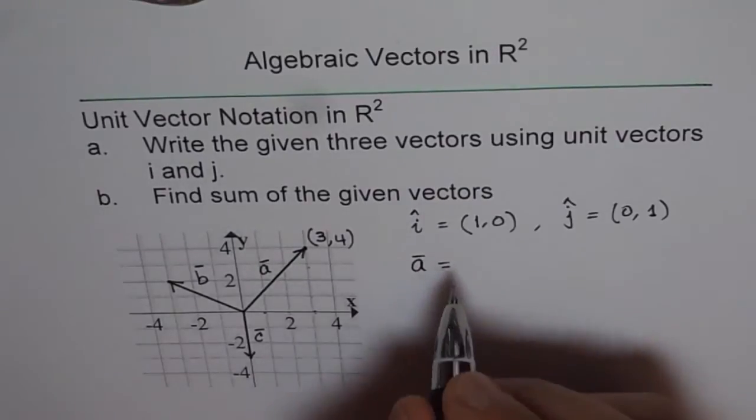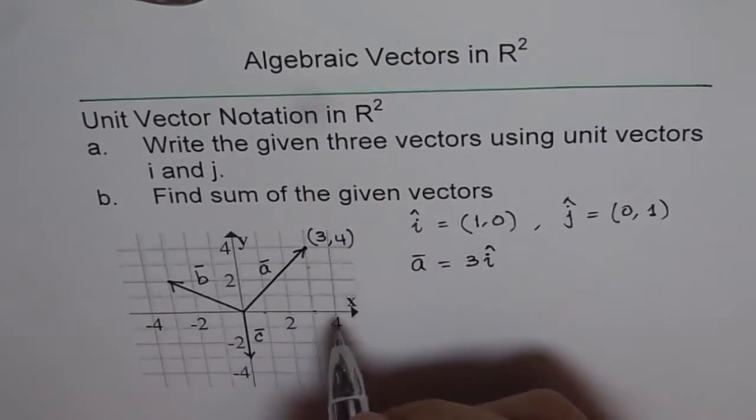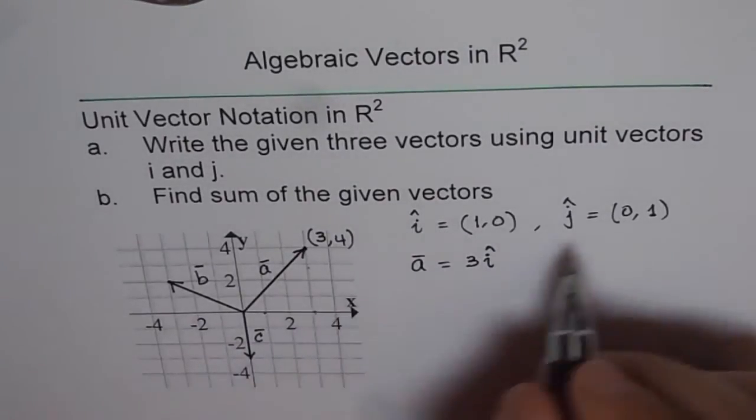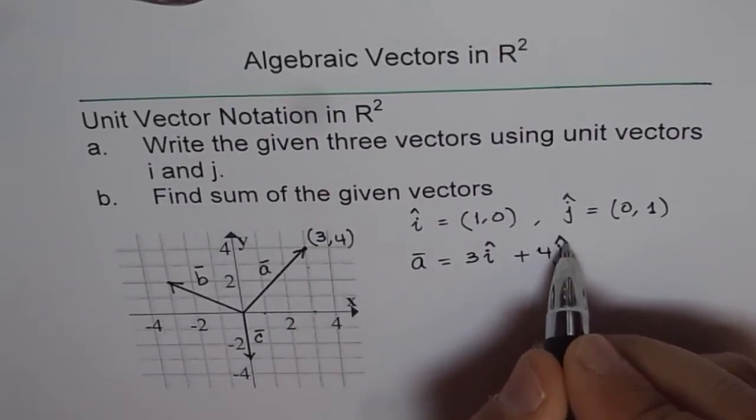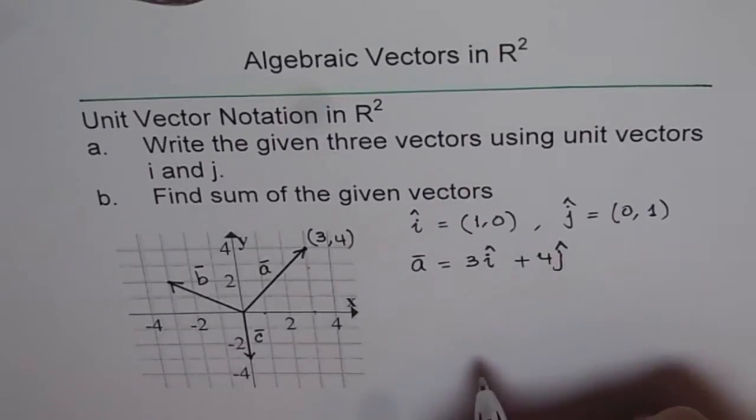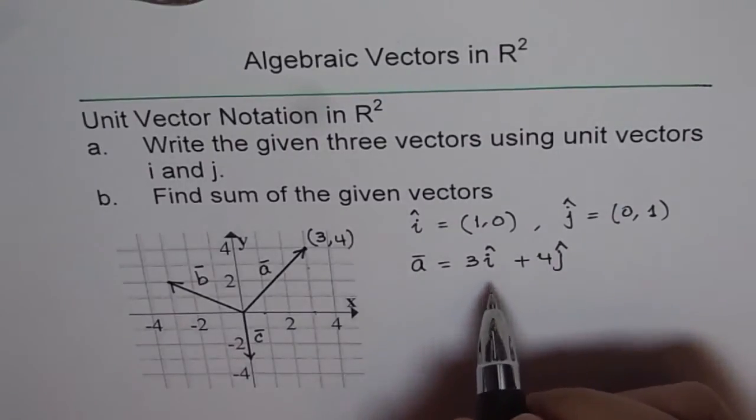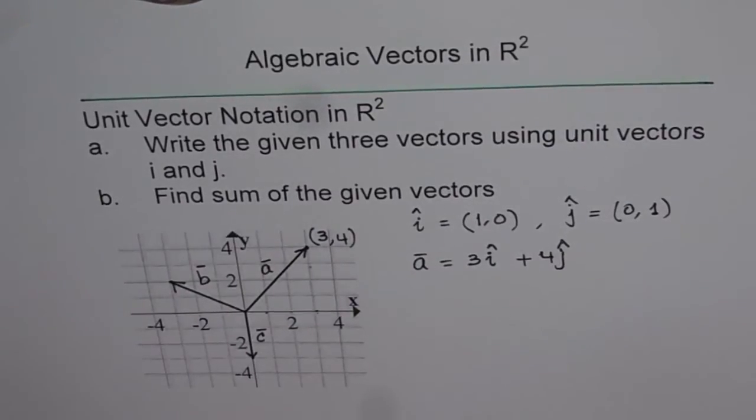Or we can write this as 3i. And along j, it is 4 units times j. J is a unit vector. So 4j. So j specifies direction, which is along Y. So they become scalar multiples of our unit vectors along x and y-axis. So that is a very convenient and helpful notation to represent vectors. And we will soon see how they can be applied to do algebraic operations.